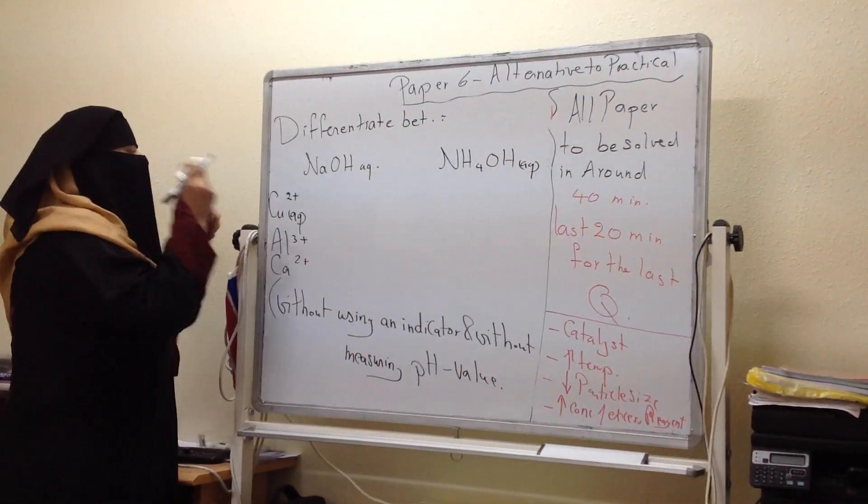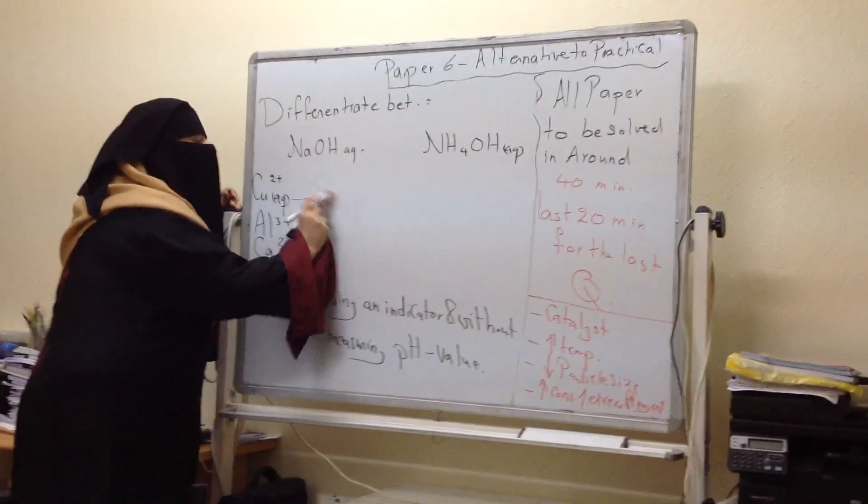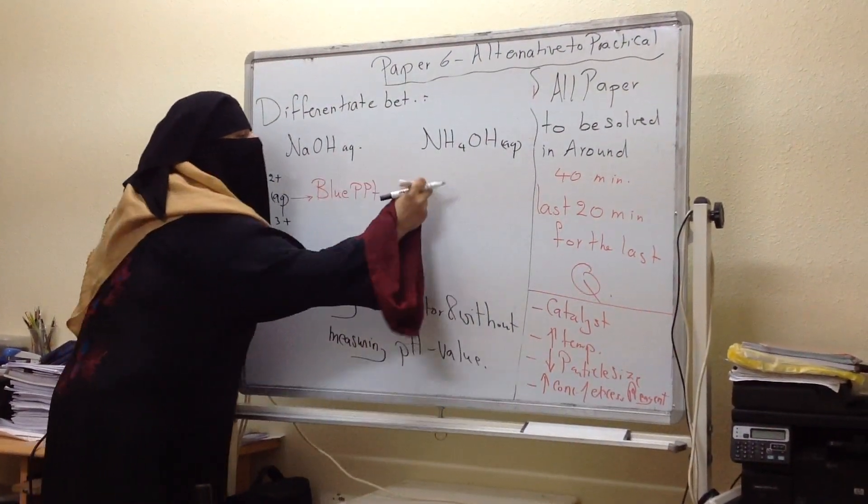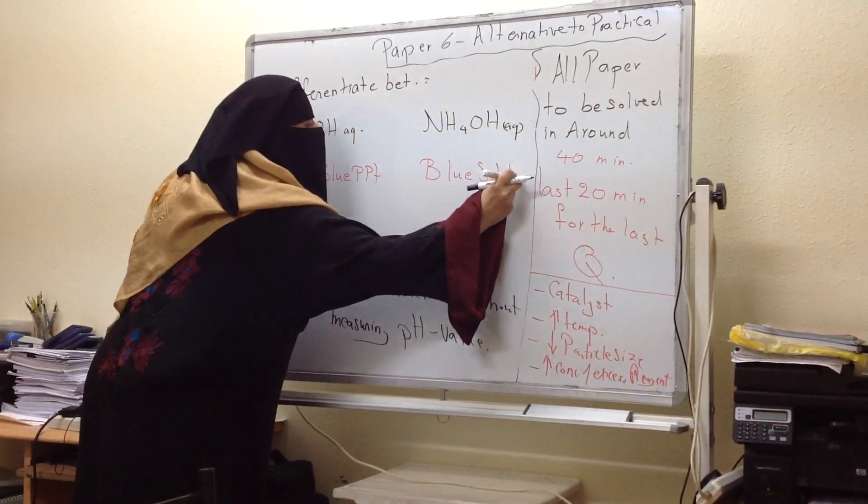If I use copper with sodium hydroxide, it will give me blue precipitate. With ammonia, it will give me blue solution, dark blue solution.